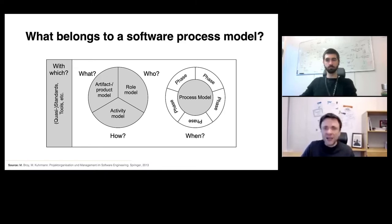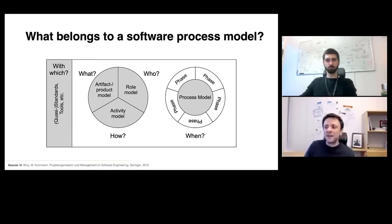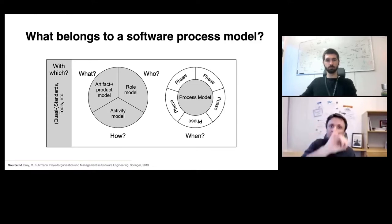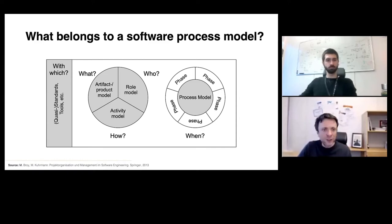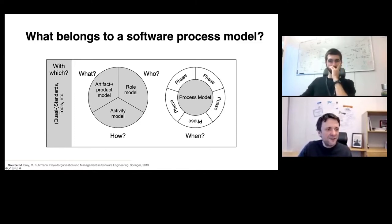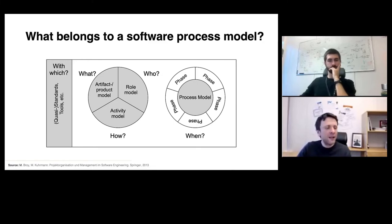Beyond these four elements, software process models also define how phases are interwoven — in a plan-driven waterfall approach, an iterative approach, or iterative incremental approach. Every software process model typically also includes supporting material like documentation templates or tools. Every project instance must comply with the software process model, but not everything dictated by the model has to be done in every project — this is why we tailor the model at the beginning of each project.